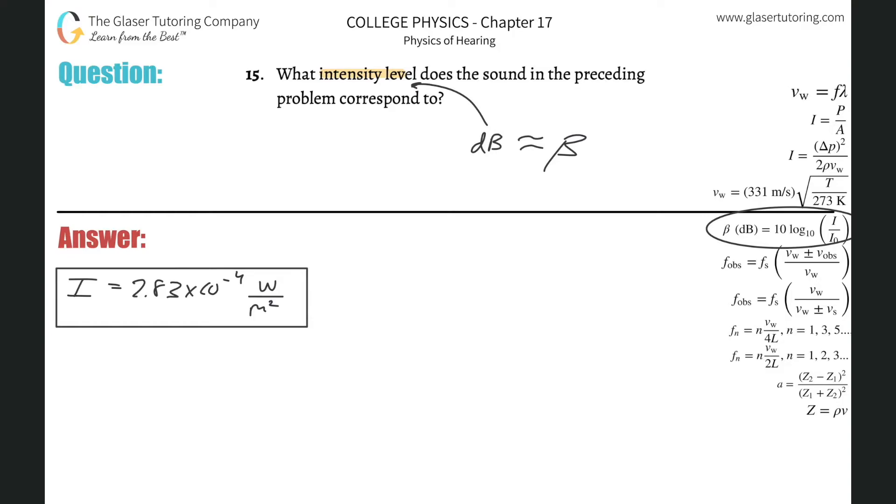It tells us that the decibels, or beta, will be equal to 10 multiplied then by the log base 10 of the intensity of the sound that is being heard, basically, divided by I sub 0, which is the threshold of hearing. This threshold is a constant value of 10 to the minus 12, so I suggest you memorize that.